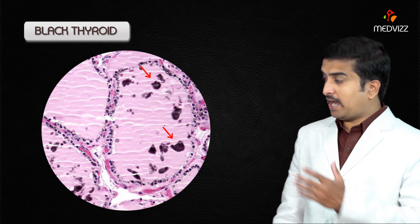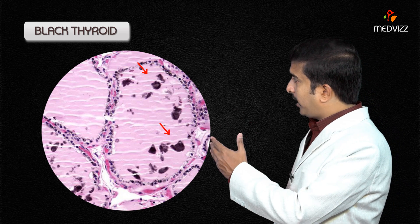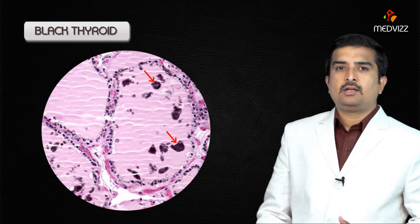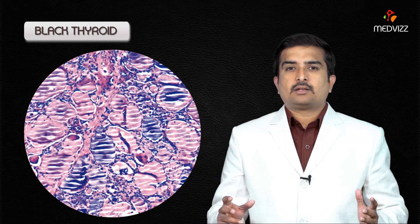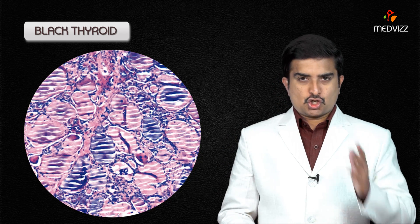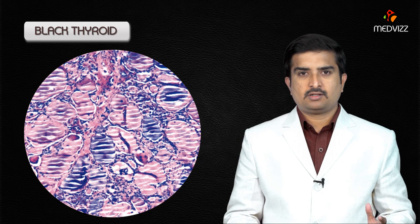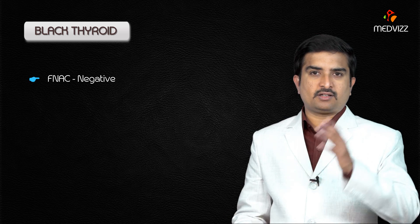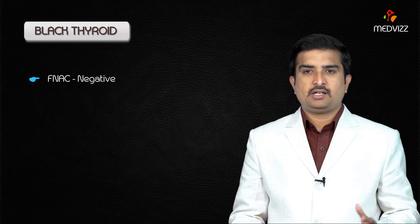The colloid can also be seen on microscopic examination. Electron microscopy shows subcellular localization in the thyrocyte lysosomes. Cytology after fine needle aspiration is usually negative for pigmentation in this condition.